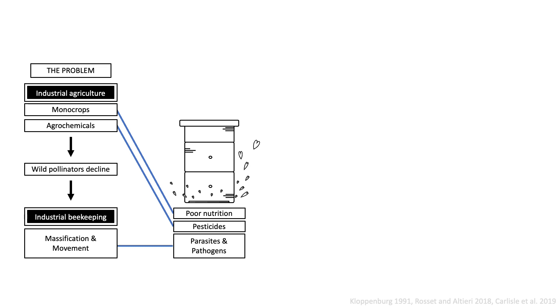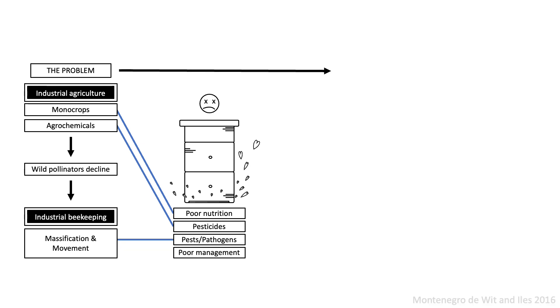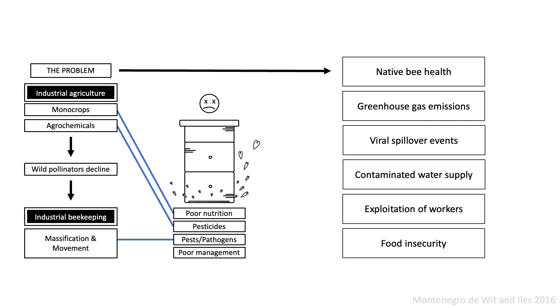If turning towards the dangerous questions is uncomfortable, turning away from them represents its own existential threat. When we normalize industrial agriculture, we are not just pushing honeybees to survive a system that doesn't support their survival — it's much more than that. When honeybee researchers describe the conditions of industrial agriculture without calling into question the system that creates them, we lend legitimacy to the erroneous idea that industrial agriculture is an immutable system, when it is actually only one of many forms of food production. When we fail to acknowledge the broader context contributing to colony loss, we protect that toxic system from actual transformation. We're stuck making things work when we should be making them change. And the consequences extend far beyond honeybee health, to native bees, greenhouse gas emissions, viral spillover events, contaminated water supply, exploitation of workers, food insecurity, and beyond.